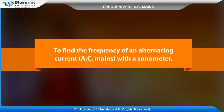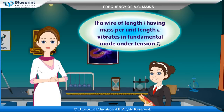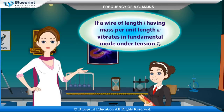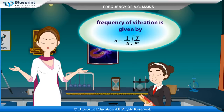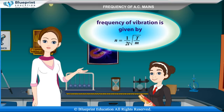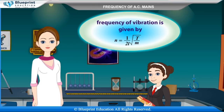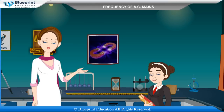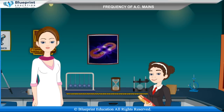To find the frequency of an alternating current AC mains with a sonometer: if a wire of length L having mass per unit length M vibrates in fundamental mode under tension T, then the frequency of vibration is given by N = 1/(2L) × √(T/M). This is called the fundamental frequency of the wire.